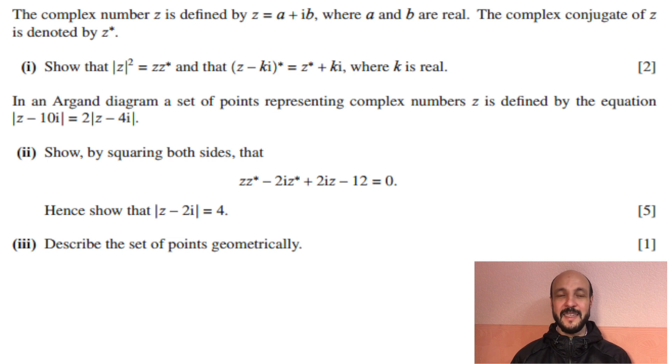The complex number z is defined by z equals a plus ib, where a and b are real. The complex conjugate of z is denoted by z star. Part (i): Show that the modulus of z squared is equal to zz star, and that bracket z minus ki close bracket star is equal to z star plus ki, where k is real.